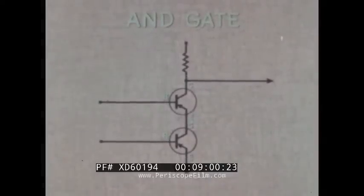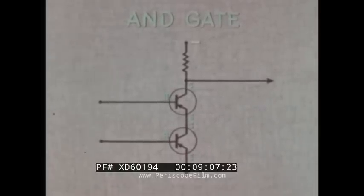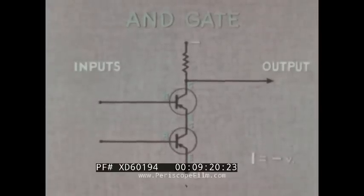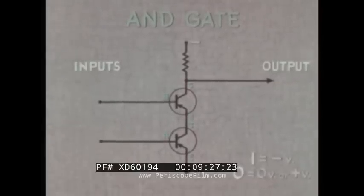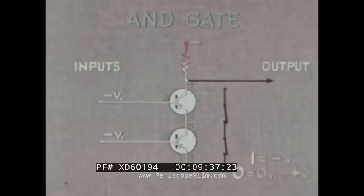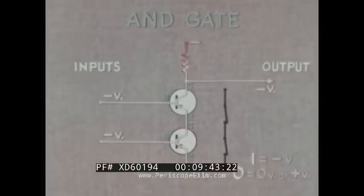Switching in this manner is the commonest use of transistors in computer logic circuitry. This is a typical transistor AND gate. The resistor is returned to a relatively high negative voltage. The base leads are the inputs, and output is taken at the resistor. Binary one is associated with a low negative voltage, and binary zero with zero or low positive voltage. When both inputs are negative, base and collector currents flow and the transistors act as closed series switches. Output voltage is developed at the resistor, satisfying the logic requirement of one-and-one inputs with a one output.